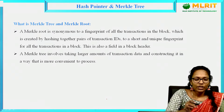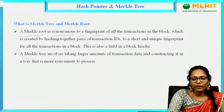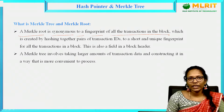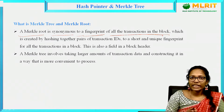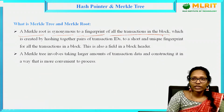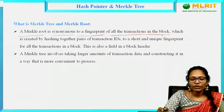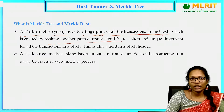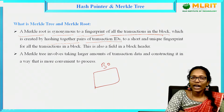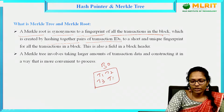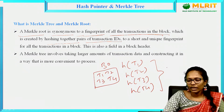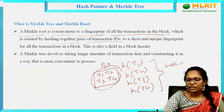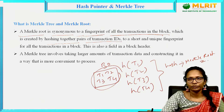What is a Merkle root or Merkle tree? A Merkle root is synonymous to a fingerprint of all the transactions in the block — it is a unique value. It is the hash value of all the transactions together, which is created by hashing together the pair of transaction IDs. For example, consider in block 0 we have four transactions T1, T2, T3, and T4. For T1 we calculate a hash, for T2 a hash, for T3 a hash, and for T4 also a hash. Altogether they generate the hash of the overall block, and this you call the Merkle root.